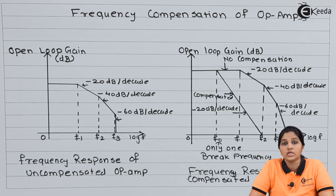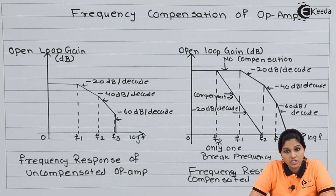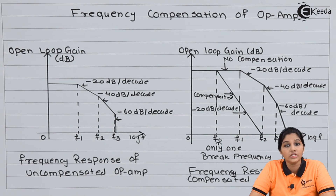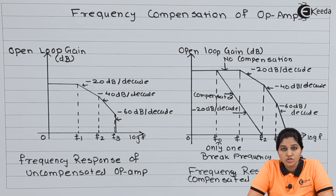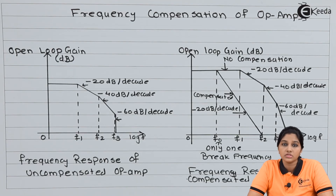In case of op-amp 741C, the compensation can be achieved by using an internal capacitor of 30 picofarad. I hope you understood the topic of frequency compensation of op-amp. Thank you very much for watching this video — stay tuned to Ikira, subscribe to Ikira, thank you.